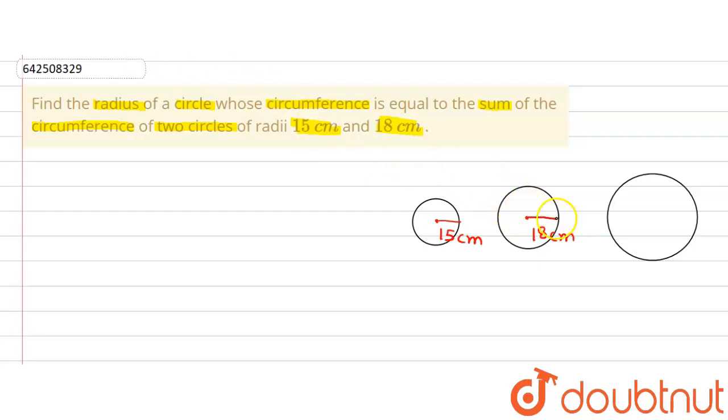We are supposed to find out the radius of a bigger circle. Let us assume that the radius of this bigger circle is capital R and we are given that the circumference of this circle is equal to sum of circumference of these two circles.